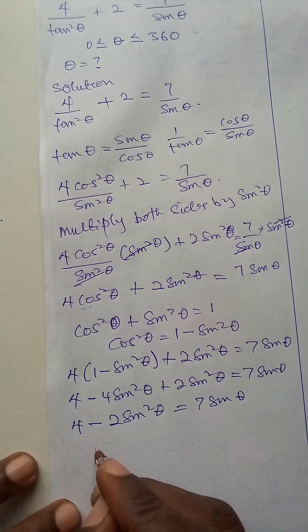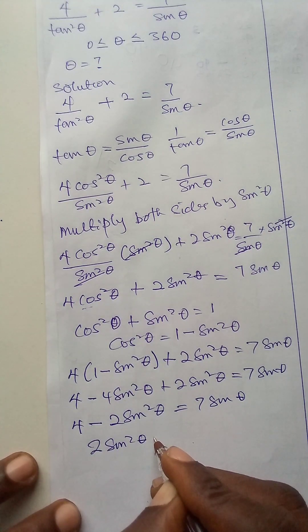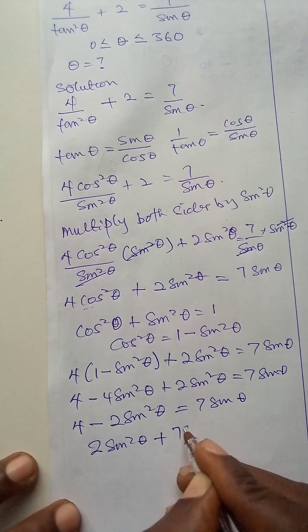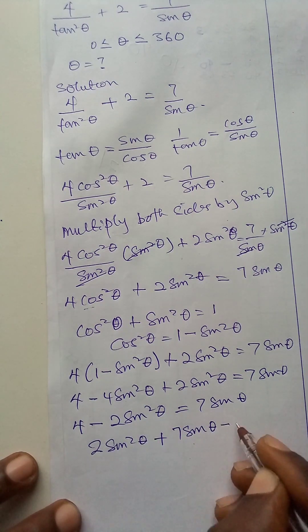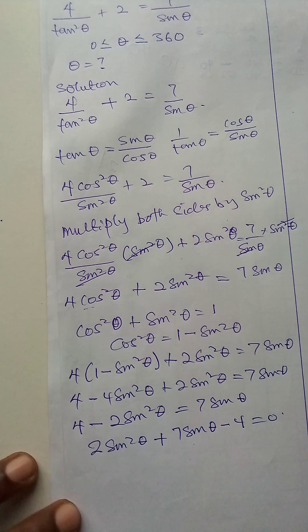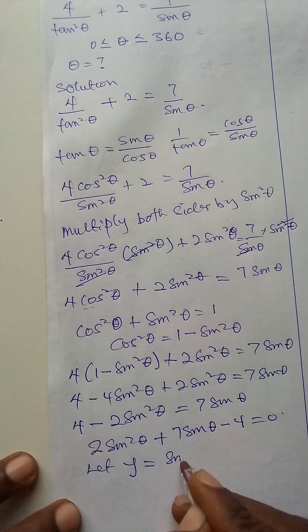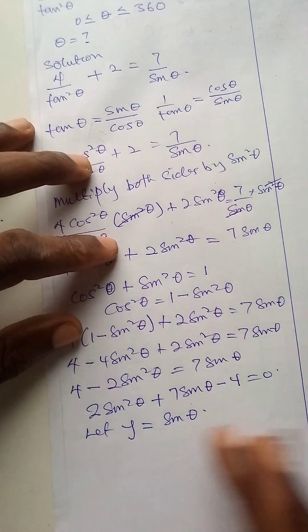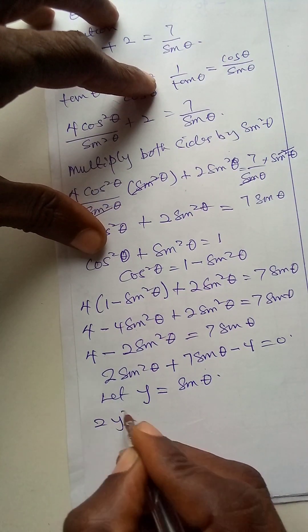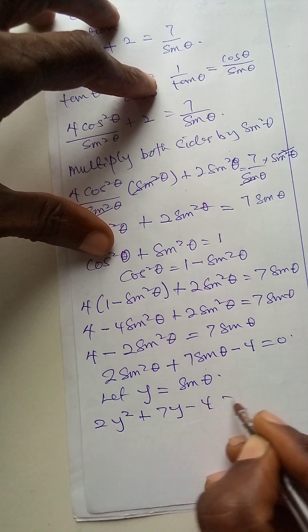If I rearrange, it becomes 2 sine squared theta plus 7 sine theta minus 4 is equal to 0. Now, let y equal sine theta — this now becomes a quadratic equation: 2y squared plus 7y minus 4 is equal to 0.